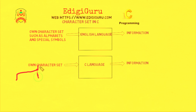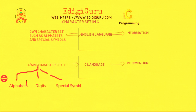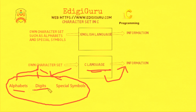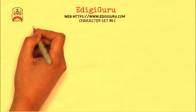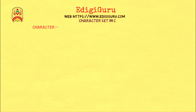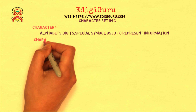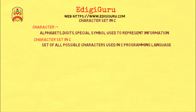C language includes the character set: alphabets, digits, and special symbols. C language uses alphabets, digits, and special symbols as raw material in order to represent the information. So alphabets, digits, and special symbols are called the character set of C. Now, what is a character? A character is nothing but an alphabet, digit, or special symbol used to represent information. What is a character set? A character set is nothing but the set of all possible characters used in a C programming language.